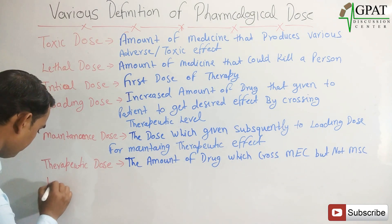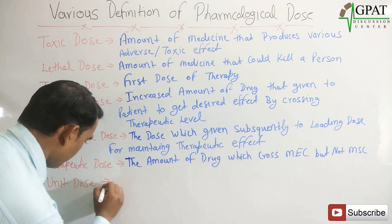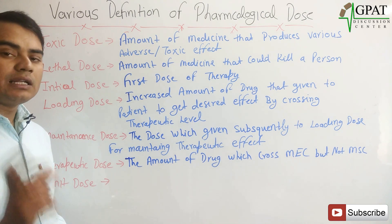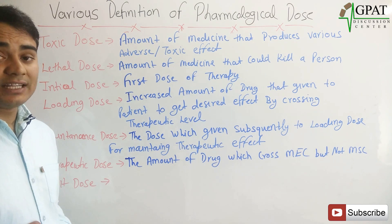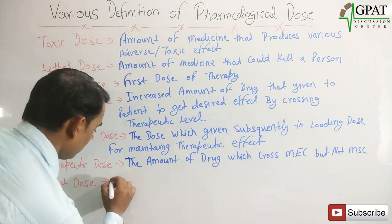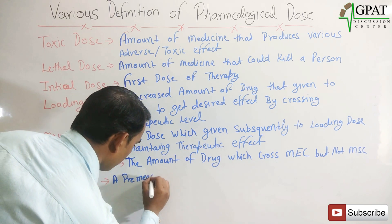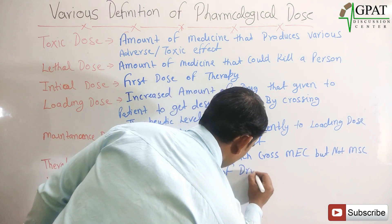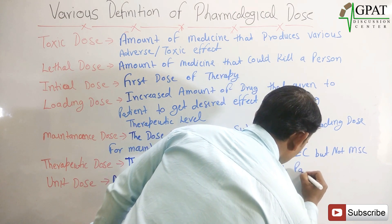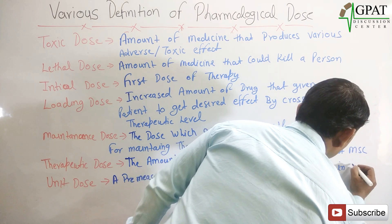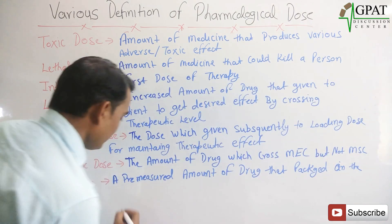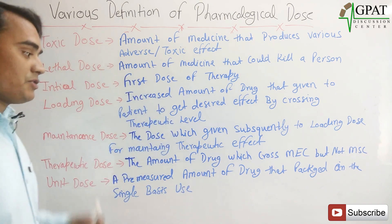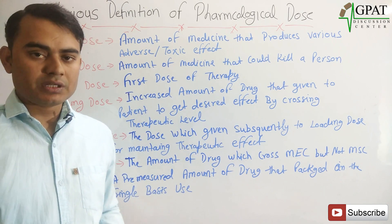Next, unit dose. What is the unit dose? When a pre-measured amount is packed on a single-use basis, that is known as the unit dose — a pre-measured amount of drug packed on a single-use basis, meaning it can be used a single time.